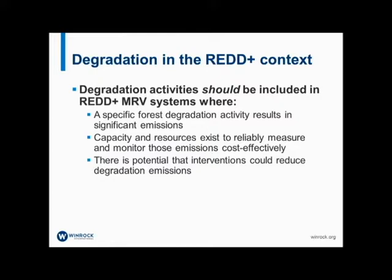The VCS is more specific: it wants complete accounting but does not require activities included to be comprehensive, so individual activities can be selected — for example, including timber harvesting but excluding fuel wood collection if that's an insignificant emission source. The FCPF of the World Bank is yet more specific, setting the criteria that if degradation emissions are more than 10 percent of total forest-related emissions, then they should be included. But all these approaches require some estimation of emissions in order to determine whether they're significant.